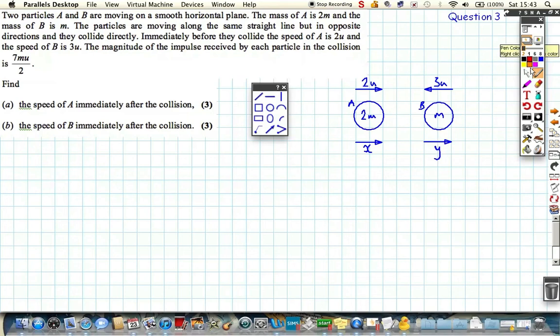Because clearly the speed of A is not going to increase by bashing into B, A is either going to be reversed with a minus velocity or it's going to be reduced. We're pretending we're not sure but we think it's going to be reduced, which means A is experiencing an impulse in this direction. The impulse we're told is 7mu over 2.